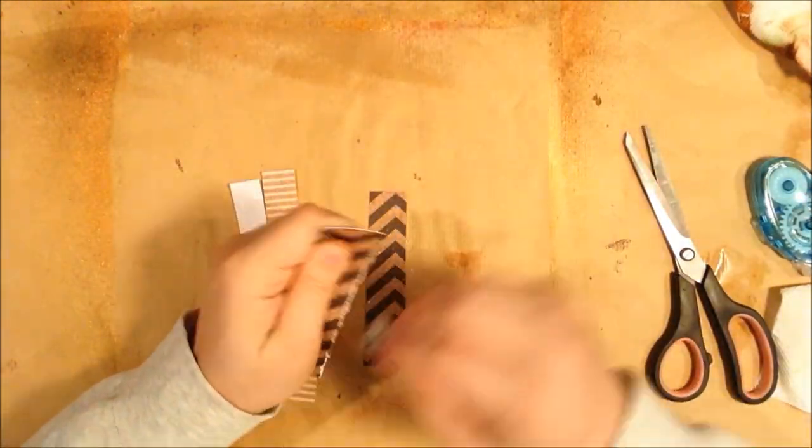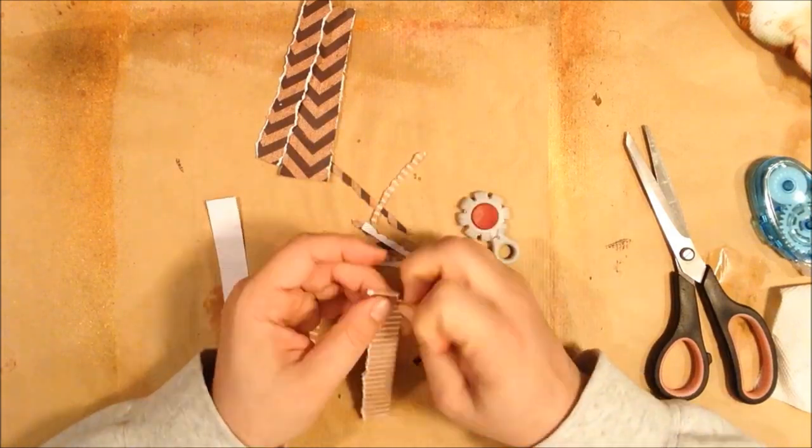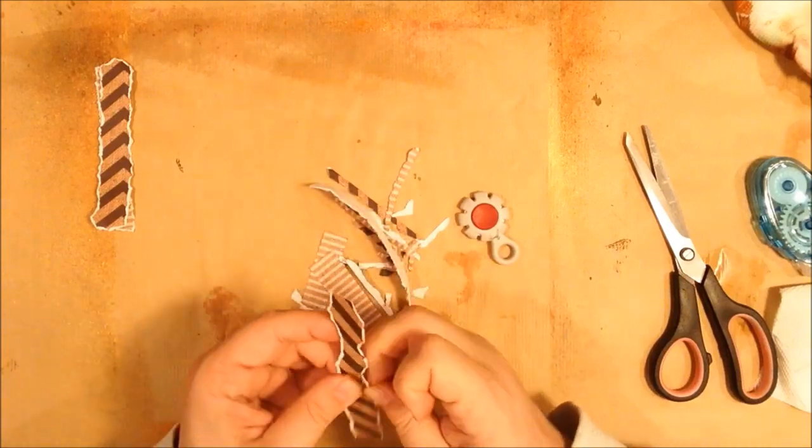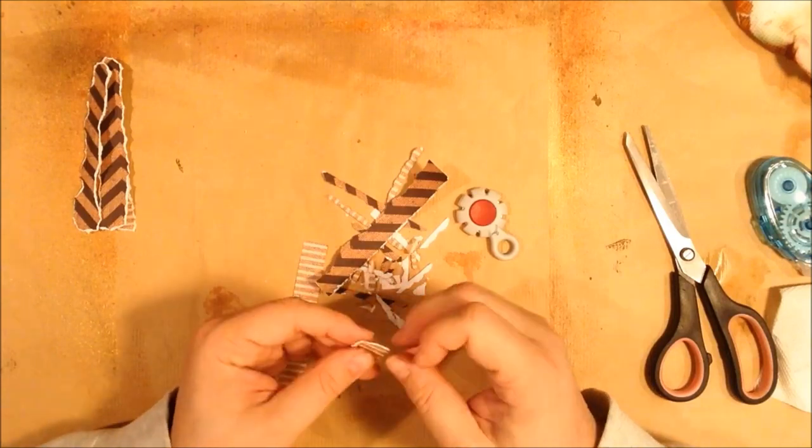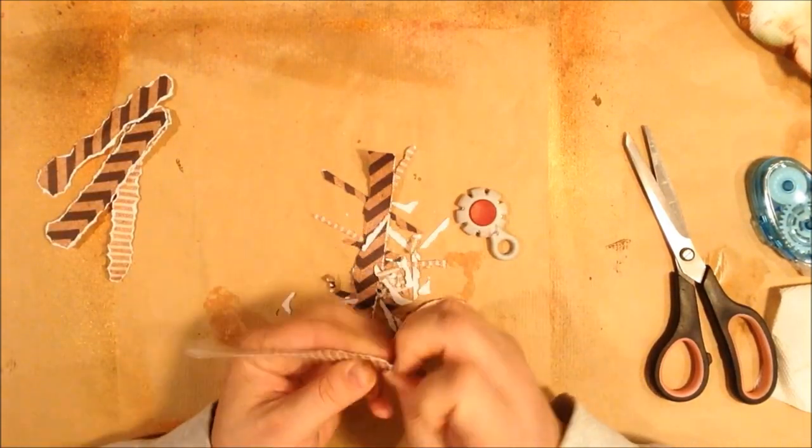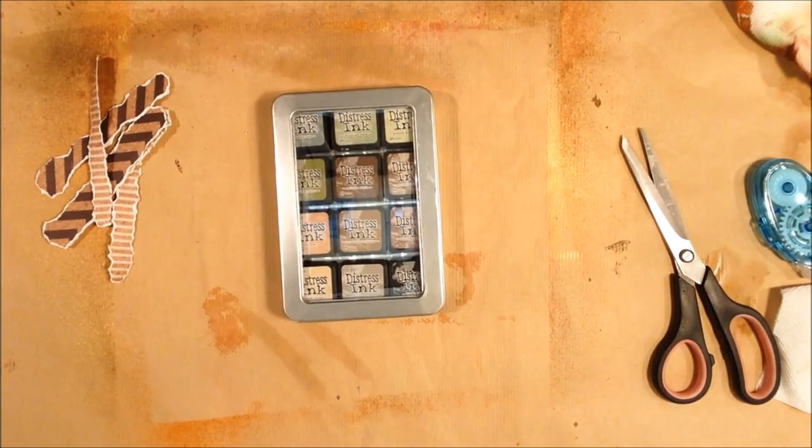Cutting up some pattern paper and I'm going to distress the sides of them. I started using the Tim Holtz Distressor, but then I just decided to sort of tear the edges of them. And then in a second I'll start using an ink blending tool with some distress inks. And I used Walnut Stain and Vintage Photo to sort of darken the edges of these pieces of pattern paper.